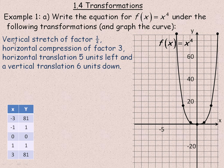We're told we have a vertical stretch factor of one half, so the whole function is multiplied by a half and the y values are half the size. The horizontal compression of factor 3 means all the x values are divided by 3, so the graph is compressed to a third of its size. The horizontal translation moves the graph 5 units left, and the vertical translation moves it 6 units down.